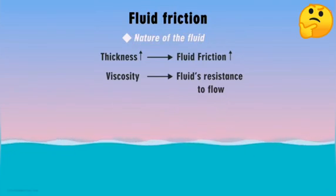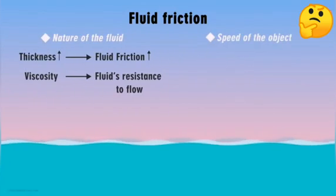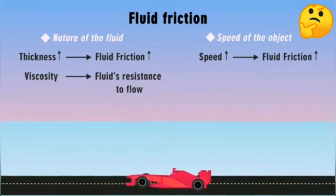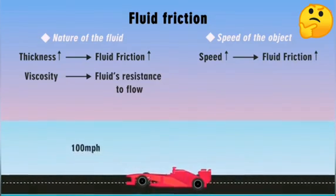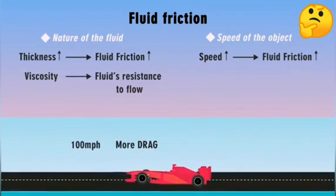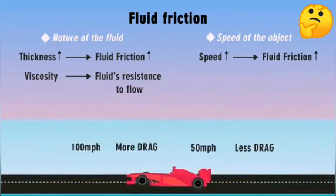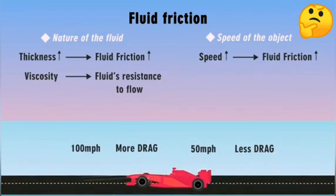Can you think of any other factor? Another factor is the speed with which the object is traveling. Higher the speed of the object moving through a fluid, greater will be the frictional force acting on it. A vehicle traveling at 100 miles per hour will face more drag from air compared to a similar vehicle traveling at 50 miles per hour.